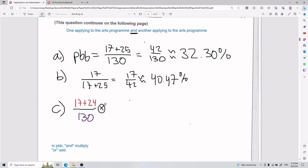Now, the probability of another applying to the arts program, a lot of you might say it's the same thing, 17 plus 24 divided by 130. And this is slightly, slightly wrong. Take a moment and think why this might be slightly, slightly wrong.